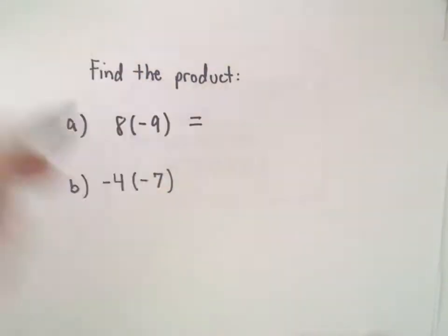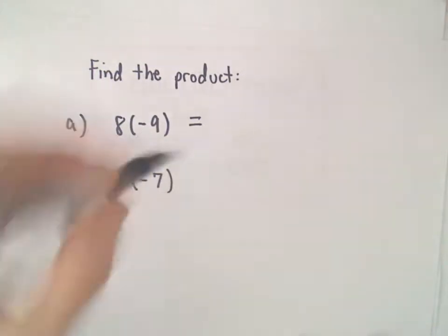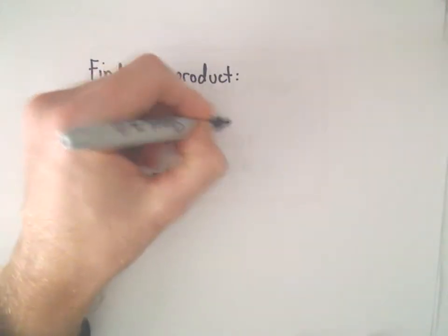So, 8 times negative 9. We have a positive times a negative. A positive times a negative is going to give us a negative number.